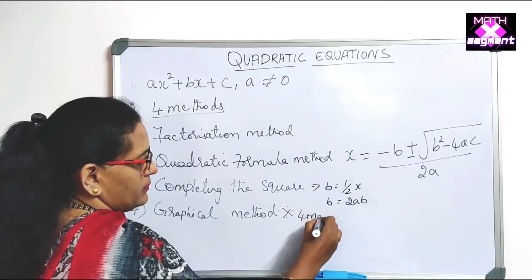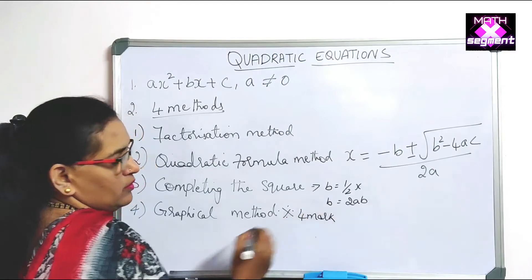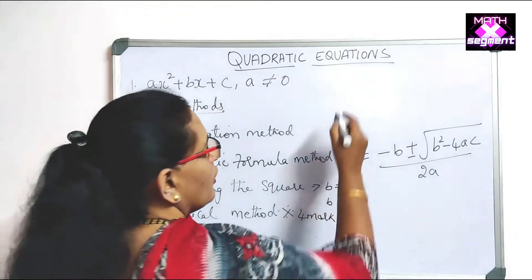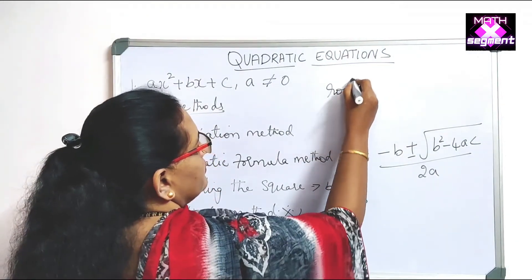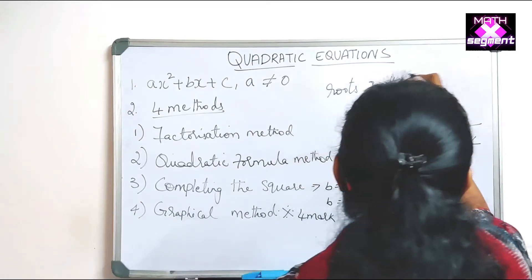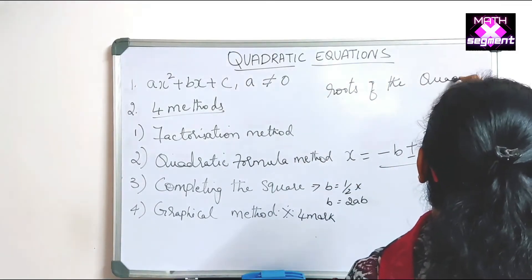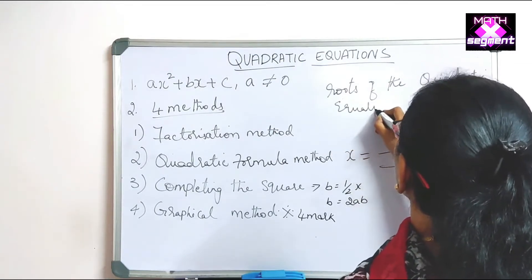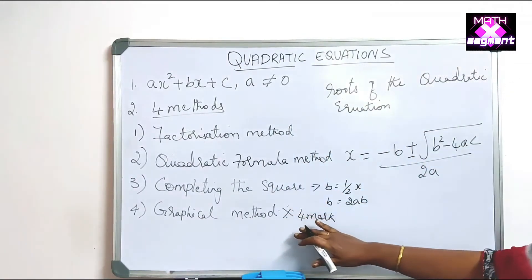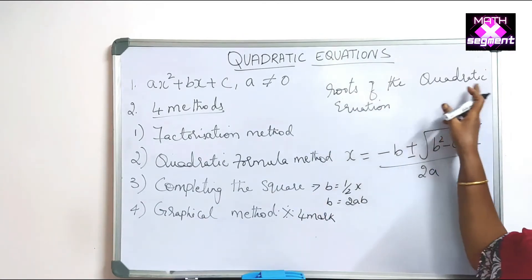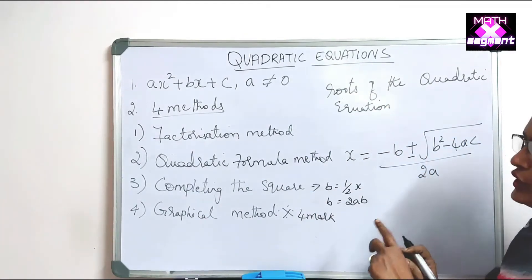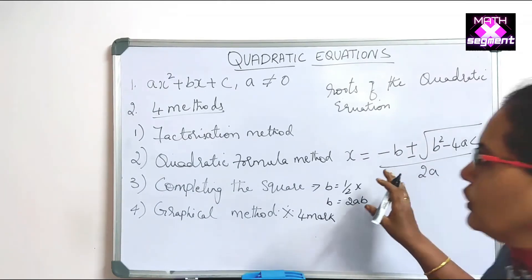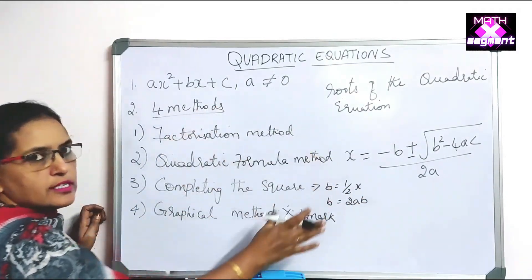All four methods are used to find the roots of the quadratic equation. In a quadratic equation, we always find two roots. That is why we use these four methods to solve problems from this chapter.